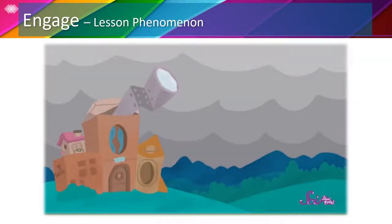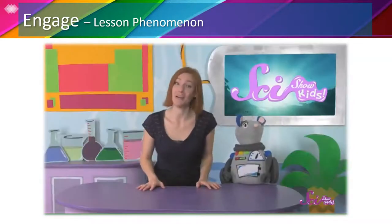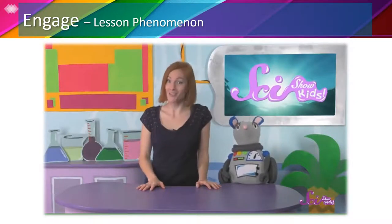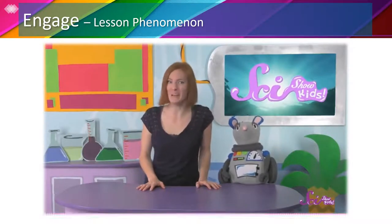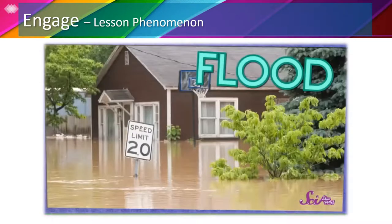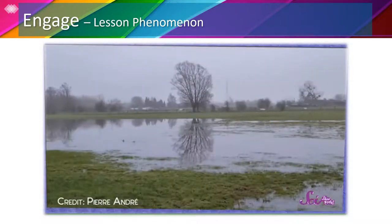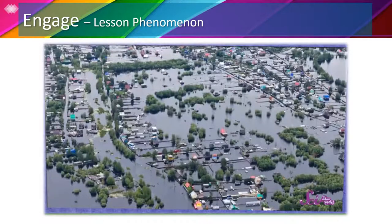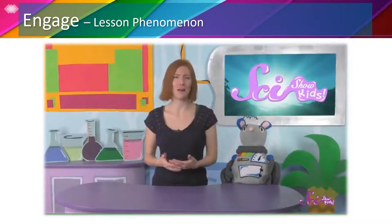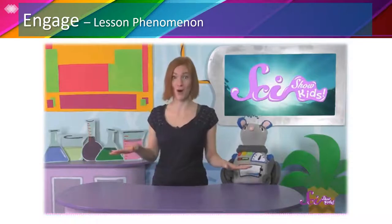It finally stopped raining! It's been raining here for a few days and the news was saying that we might even get a flood. A flood is where there's water all over, even where there's usually land. Floods can be small and only cover a little space, or they can cover an entire city. Now that it's stopped raining, that probably won't happen here. But it is pretty weird to think about the ground suddenly being covered with water.